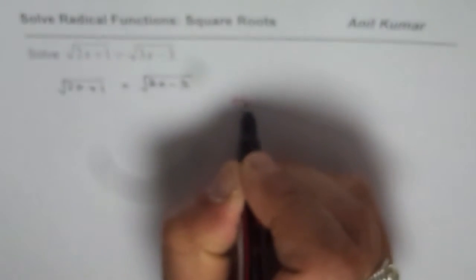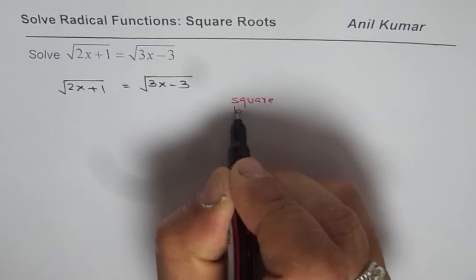To solve such a question, we need to square both sides. So if we square both sides, what do we get? Let me write down here: square both sides.